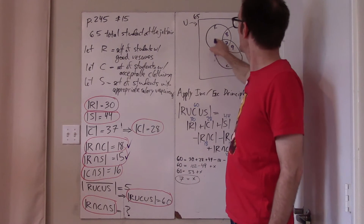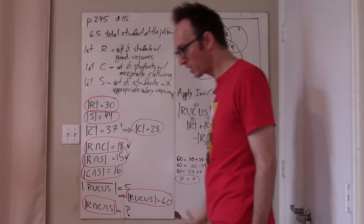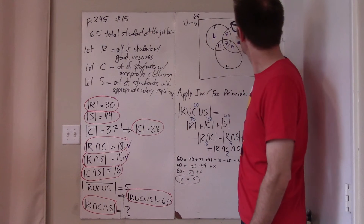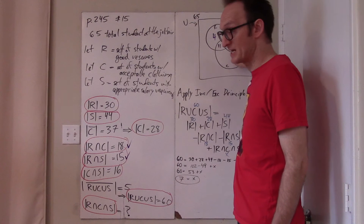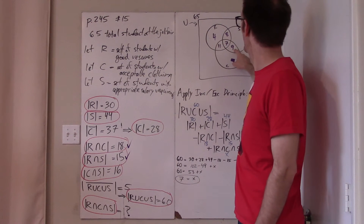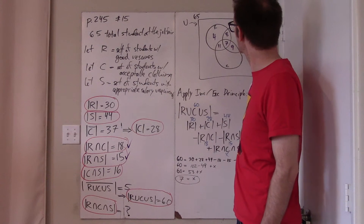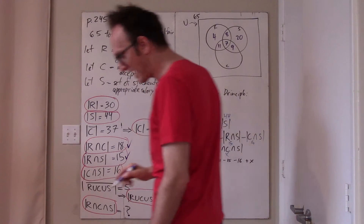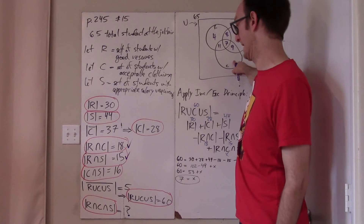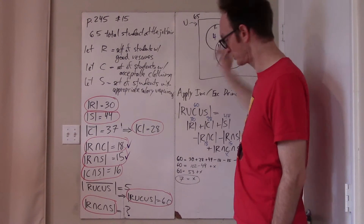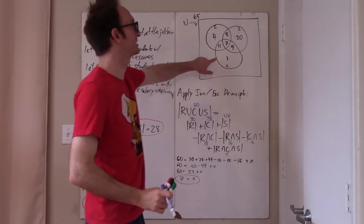So r is 30, and here I have 15, and 9 rather is 24, so s overall is 44. That makes this 20, and finally c is only 28, so there's only one person here — the poor person who...